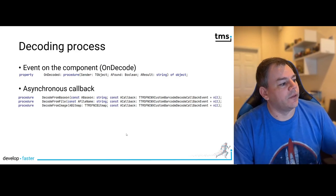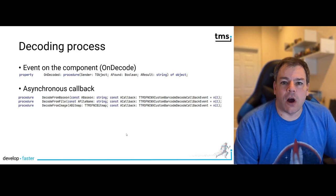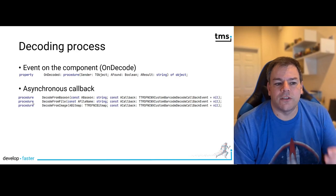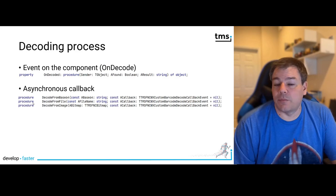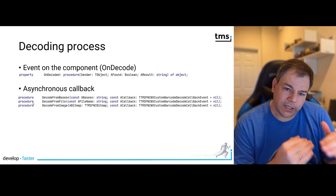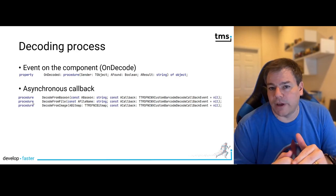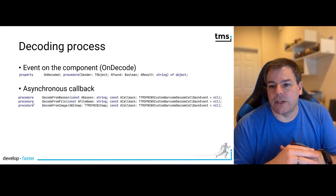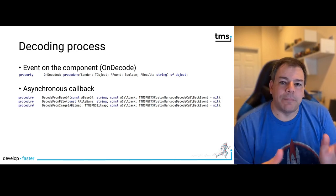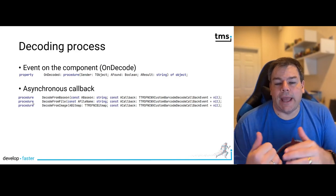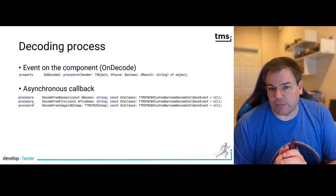Alternatively, you have a synchronous callback. Instead of providing an event, you can use an anonymous method as a callback. Using a synchronous callback is particularly useful because the code executed after decoding is tied in your source code to the method call. Also, if you have multiple types of barcodes you want to recognize, it might be tricky to distinguish the different kinds inside the event handler, and using an asynchronous callback makes it much easier.